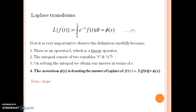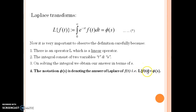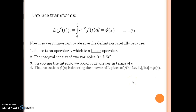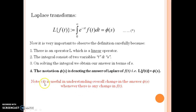The next observation is very abstract and very general. See this notation: Laplace of f of t is equal to phi of s. This is frequently encountered in this chapter. The meaning of this notation is that whatever change is recorded in the function f of t — the function on which the Laplace operator operates — that change can be recorded in the final answer phi of s.